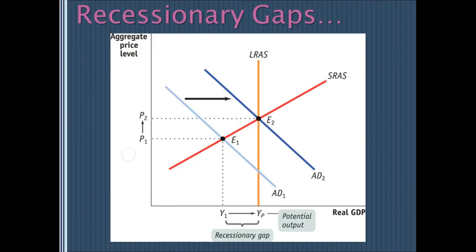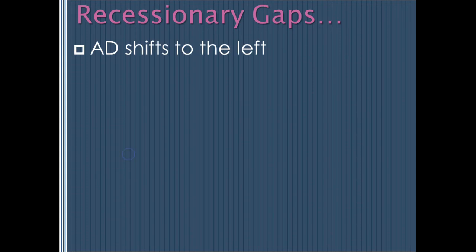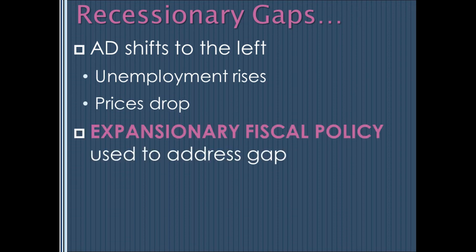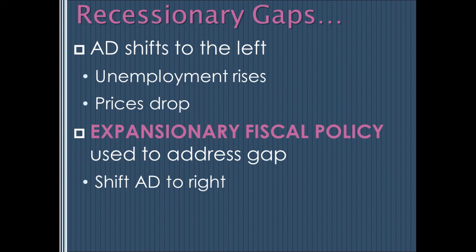The government could also be facing a recessionary gap, caused by a left shift in aggregate demand, which drives unemployment up and prices down. In that case, the government would pursue expansionary fiscal policy to shift aggregate demand back to the right and restore employment. They do this by either spending more on goods and services, increasing transfer payments so individuals can spend more, or cutting taxes — any one of those three, or a combination, would serve as expansionary fiscal policy and grow aggregate demand to the right.